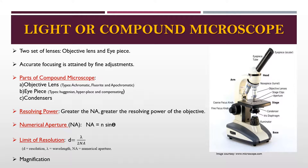A compound microscope has two sets of lenses: the objective lens and the eyepiece. The lens nearest to the specimen is the objective lens, which magnifies the image, and the lens nearest to the eye is the eyepiece, which further magnifies the image formed by the objective. Fine adjustment screws are used to attain proper focusing of the specimen under study. The main parts of a compound microscope are objective lenses, eyepiece, and condensers.